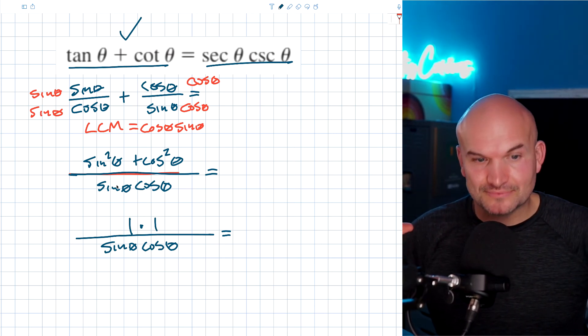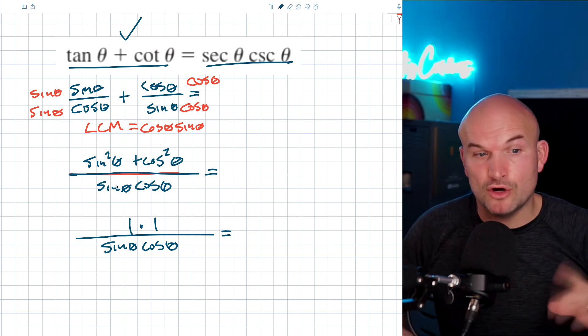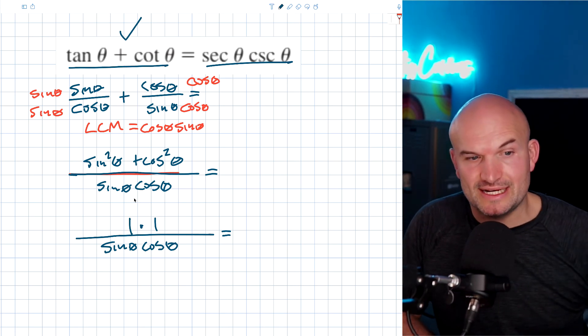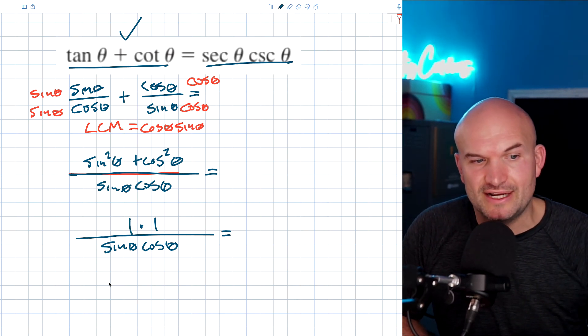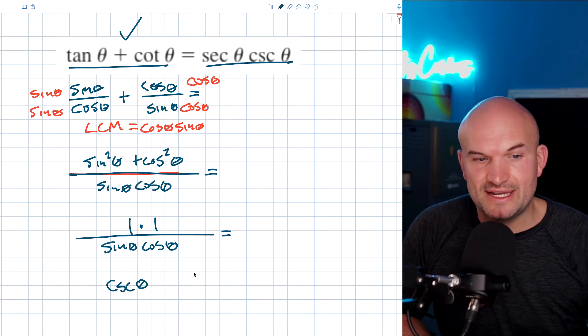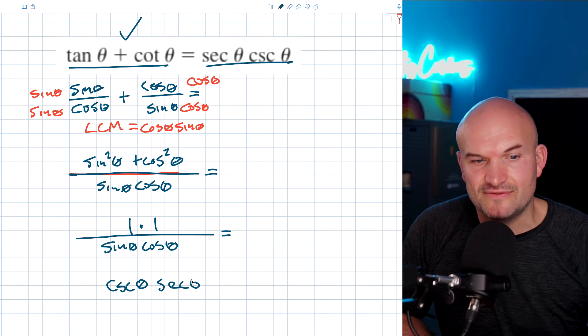So now they're both kind of being over one and using the reciprocal identities, you can recognize that one over sine of theta is going to equal cosecant of theta. And one over cosine of theta is going to equal secant of theta.